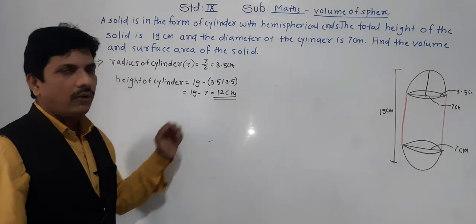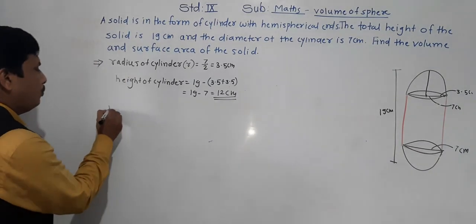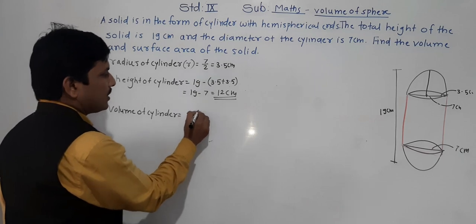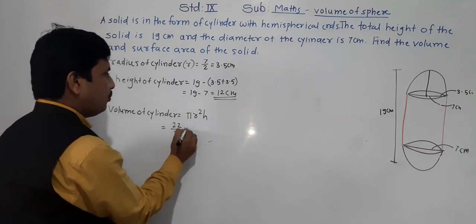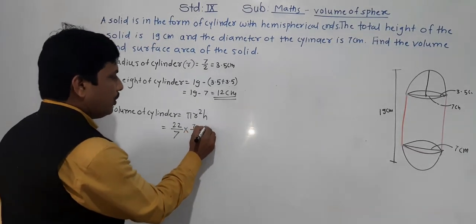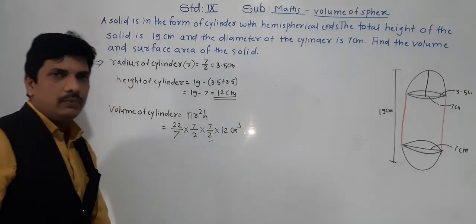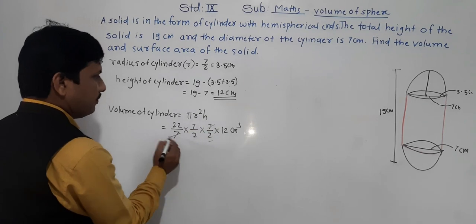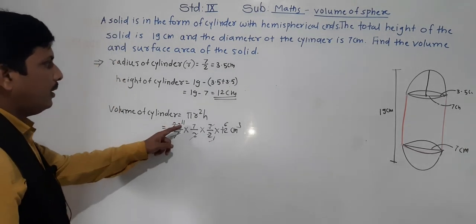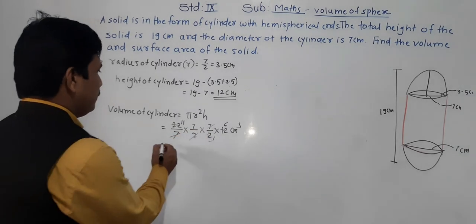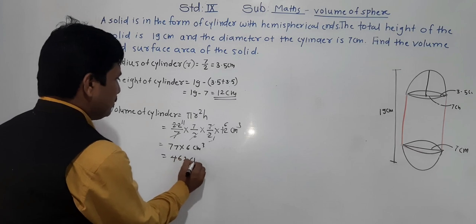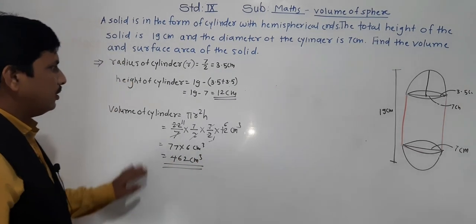Now we have radius and height, so we can find the volume of the cylinder. Volume of cylinder = π r² h = (22/7) × (7/2) × (7/2) × 12. Cancelling 7s and simplifying: 11 × 7 × 6 = 77 × 6 = 462 cm³. So the volume of the cylindrical part is 462 cm³.